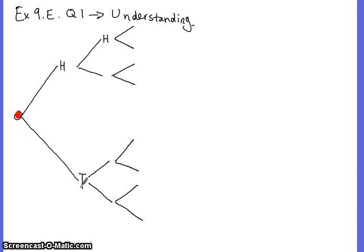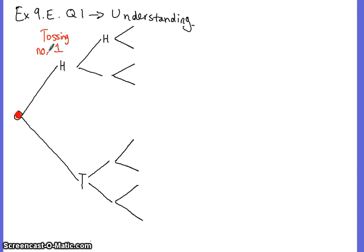Those are the only two possibilities. This is tossing the coin number one — the first time you toss the coin — and they're the possible outcomes that could happen. But since you're doing it three times, after you've got a head, you pick that coin up again and toss it again, and on this occasion it could be a head or a tail.